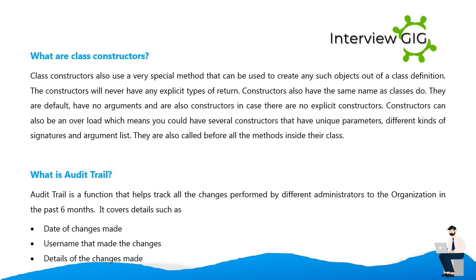What are class constructors? Class constructors are special methods used to create objects from a class definition. Constructors never have an explicit return type and have the same name as the class. They are default, have no arguments, and are used in case there are no explicit constructors. Constructors can also be overloaded, meaning you can have several constructors with unique parameters, different signatures, and argument lists. They are called before all the methods inside their class. What is Audit Trail?